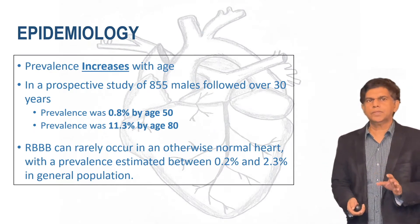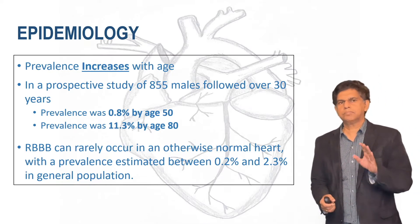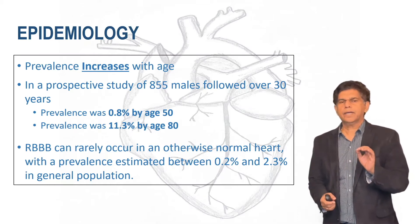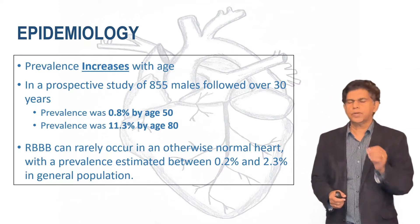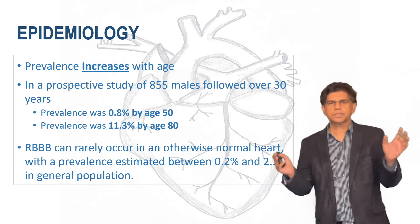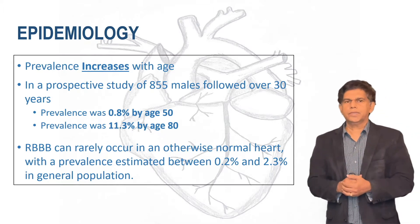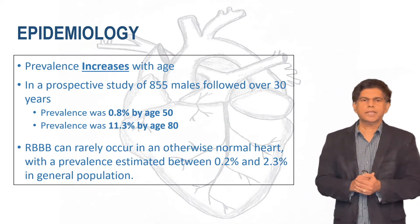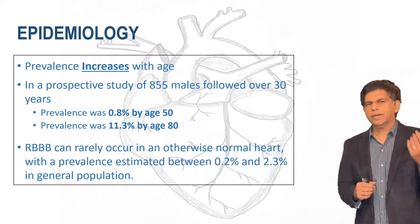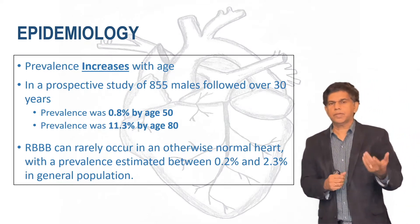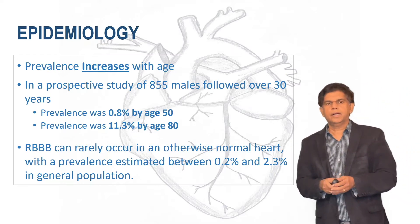The first thing we need to do with any topic is look at the epidemiology. We look at the prevalence of right bundle branch block and its relationship with age. As we get older, we always risk more diseases. When we get older, complications are higher when you have right bundle branch block. The prevalence is 0.8% by age 50. If you're 20 or 30 years old and don't have structural heart disease, the prevalence is less — but as you get older, prevalence goes up to 11.3%.